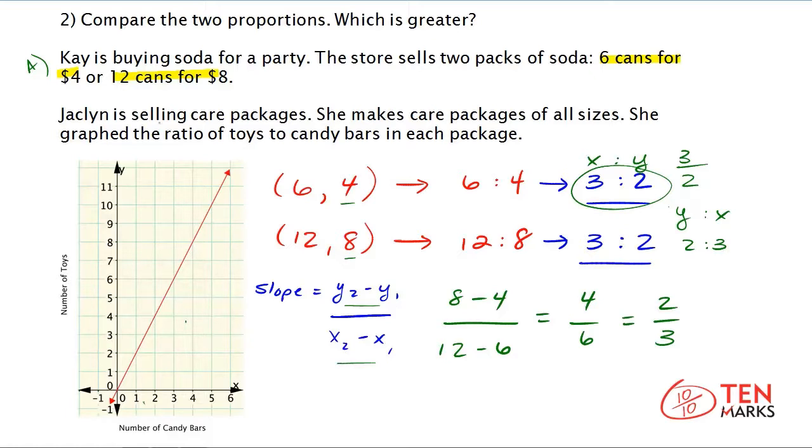Now let's look at Jacqueline. And in this case, Jacqueline is selling care packages. And she makes care packages of all sizes. She's done you a service by graphing the ratio. So she's already graphed it for you. And this is a ratio of toys to candy bars.